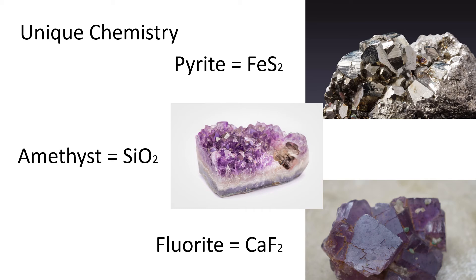Here is an example of three different minerals and their chemical formulas. The gold-colored mineral is pyrite and has iron and sulfur atoms combined together to form the mineral. The next two minerals are both purple, but we can see from the chemical formula they are quite different. Amethyst is formed when silicon and oxygen combine together, while fluorite is formed when calcium and fluoride combine together. The numbers in the chemical formula are explained on the next slide.